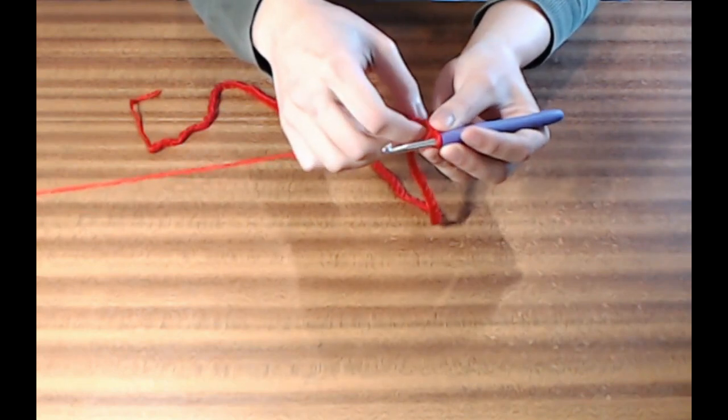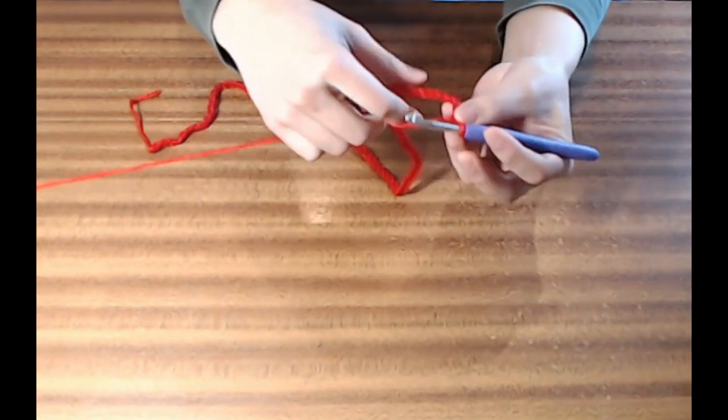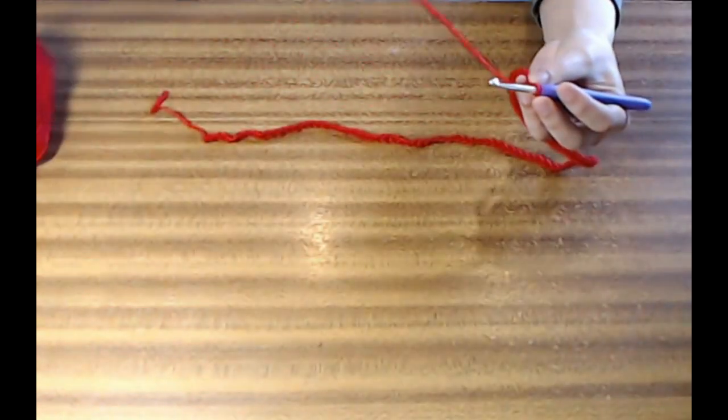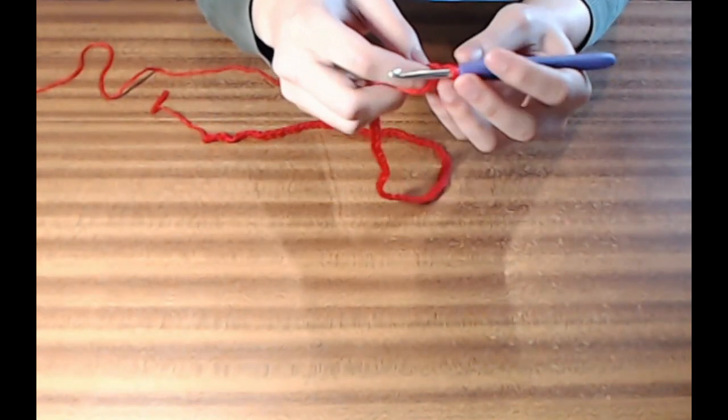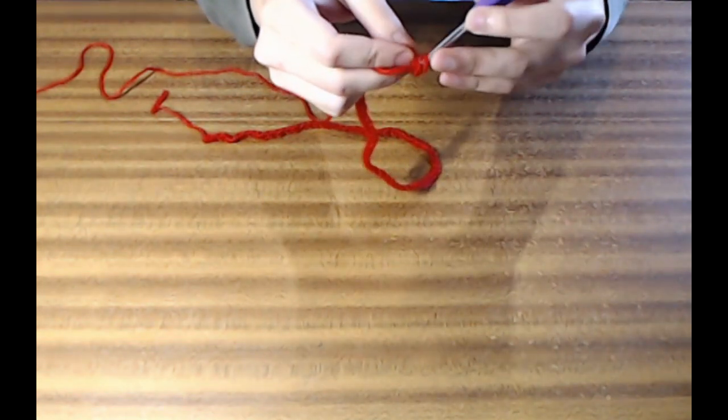At the end of the foundation chain, add one extra turning chain, and then turn the work around. Then work in a single crochet, in US terms, all the way back to get a thin rectangular strip.